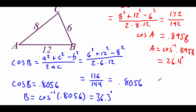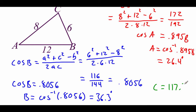Now we've got two angles inside of our triangle. We don't have to do more law of cosines to find the third angle — we can just use what we know about the angles inside of a triangle. Subtracting the two angles we have from 180, angle C should be about 117.3 degrees.